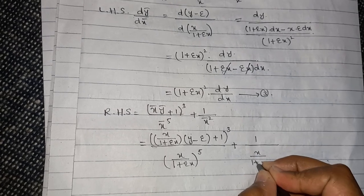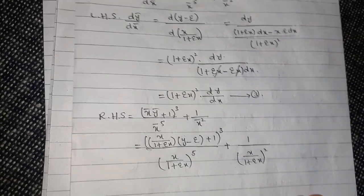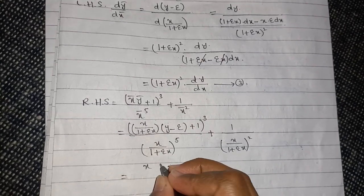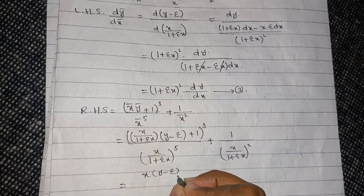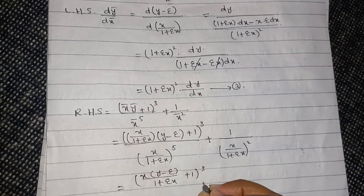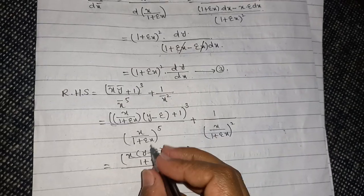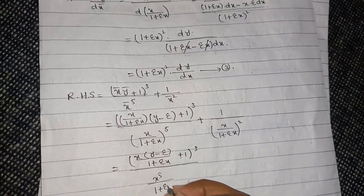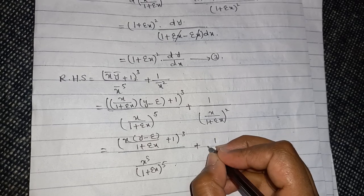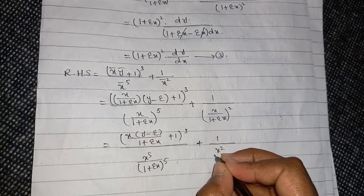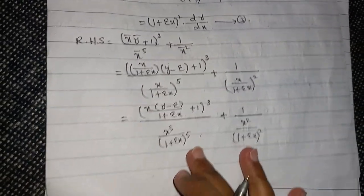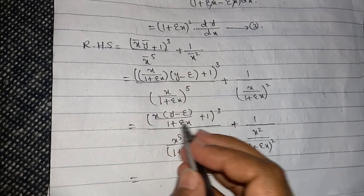Multiplying through by (1 plus epsilon*x)^2, the expression becomes: x times (y minus epsilon plus 1 plus epsilon*x) divided by (1 plus epsilon*x), all cubed, divided by x^5 over (1 plus epsilon*x)^5. Taking the LCM, the numerator becomes x*(y minus epsilon) plus (1 plus epsilon*x), giving the combined term over (1 plus epsilon*x).